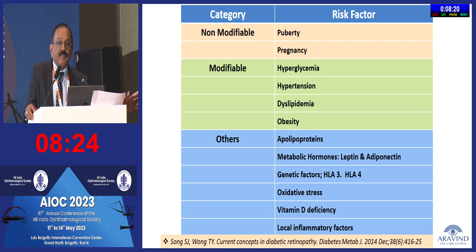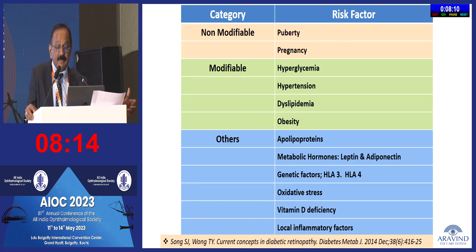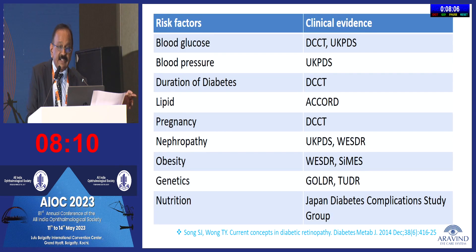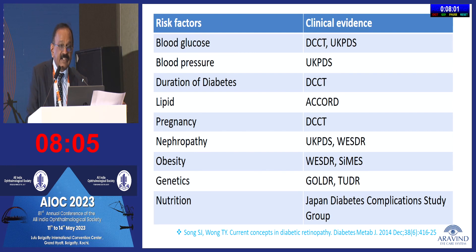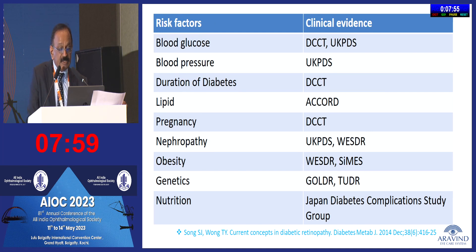There are several systemic factors affecting diabetic retinopathy: non-modifiable factors such as pregnancy and puberty, and modifiable factors such as hyperglycemia, hypertension, dyslipidemia, and obesity. There is sufficient evidence showing these are risk factors that affect the progression of diabetic retinopathy.